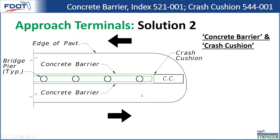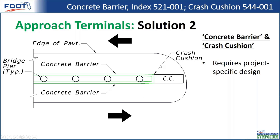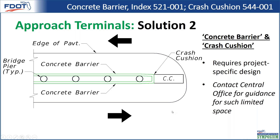Another solution that's more low-profile and takes up less space is to use concrete barrier. We already have standards showing shielding of bridge piers in this way — it basically needs an end face to connect to a crash cushion, and can handle holding backfill or a poured cap on top. For cases this limited on clear space, it does require a product-specific design, but contact central office for guidance. In future standards, we'll add more and more options to handle scenarios like this — so be on the lookout.